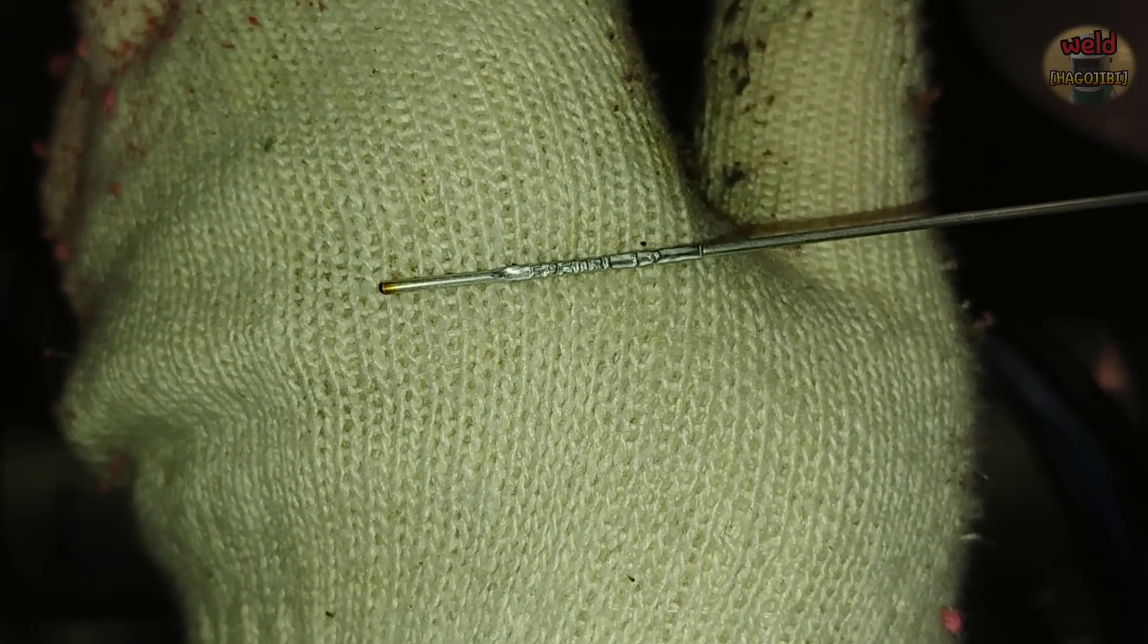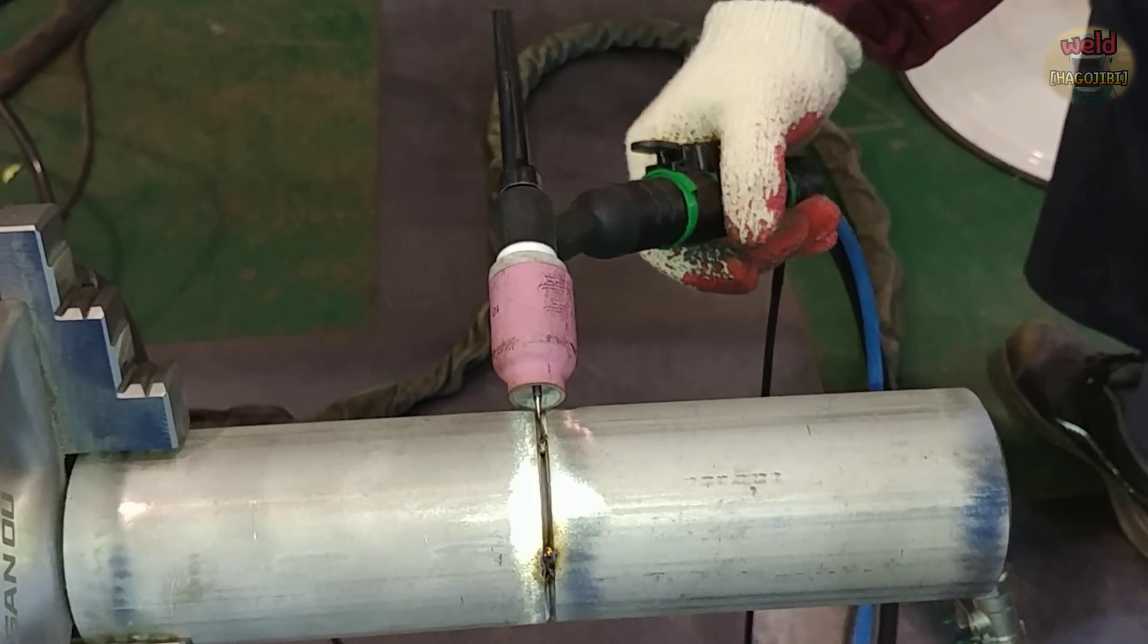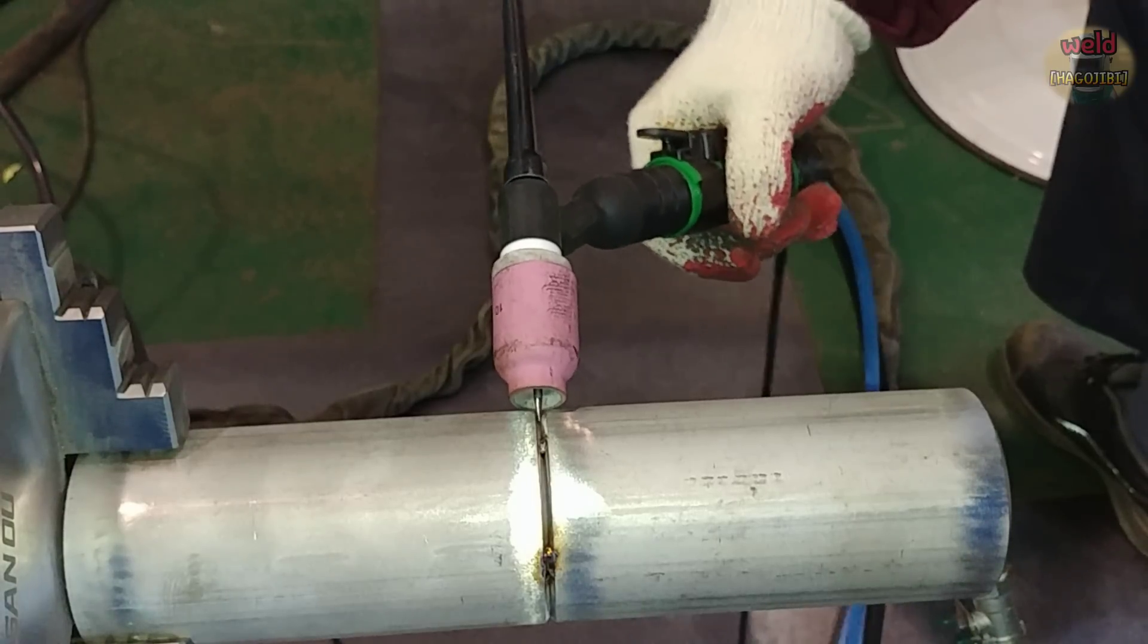The weld rod is 1.2mm. It's a hand movement. The torch is short and soft. Let's move slowly.